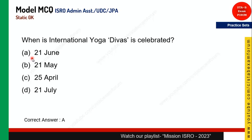If they ask on which year, your answer should be 2014. 2014 is the year when International Yoga Day was declared. However, it was first celebrated in 2015 — that is a common confusion point. It was declared in 2014 at the UN Assembly, but first celebrated in 2015. Remember that.